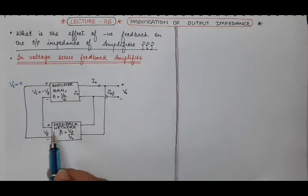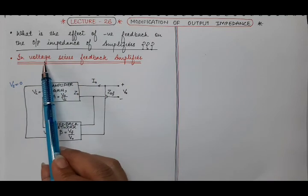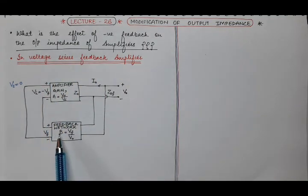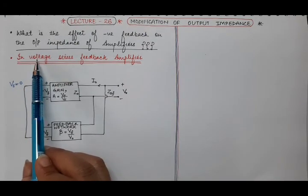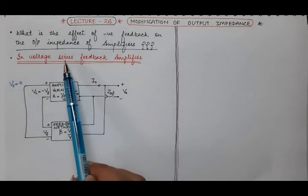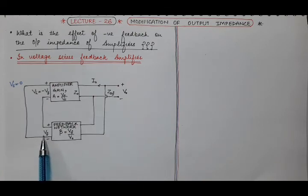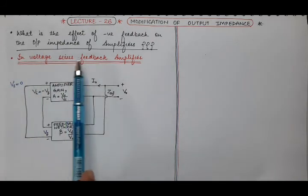Both ends of the amplifier and feedback network are connected to each other. As this is the voltage series feedback amplifier, the feedback factor will be dependent upon output voltage. The feedback will be in the form of feedback voltage because we are using voltage source, and it depends upon the output voltage because it is voltage series feedback amplifier.